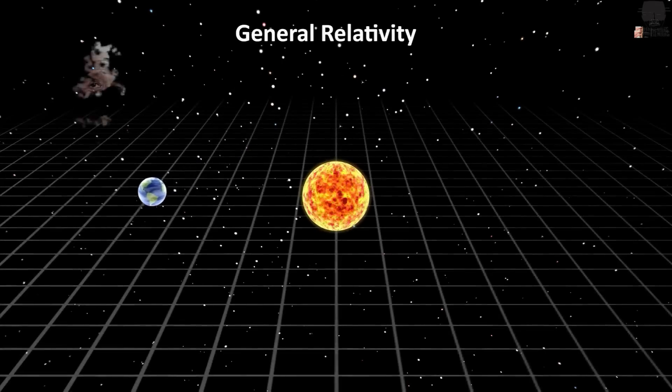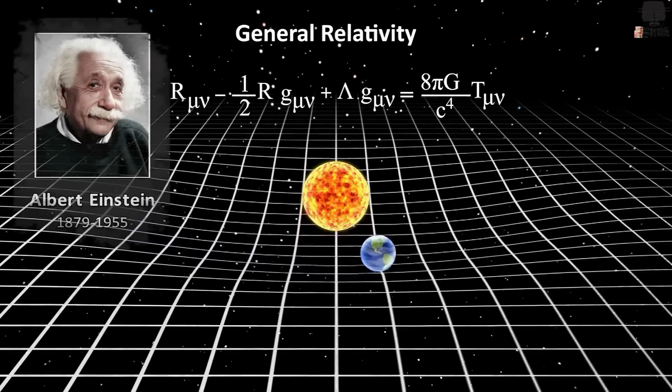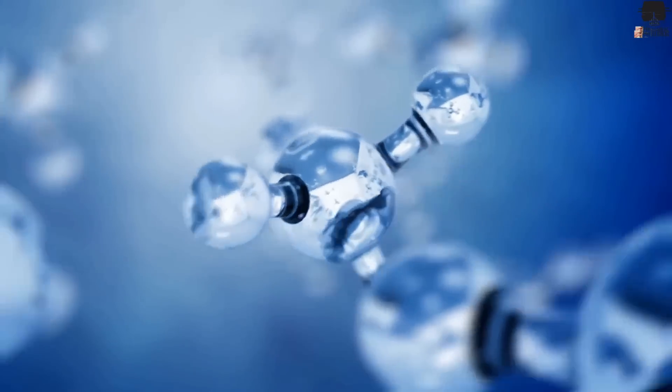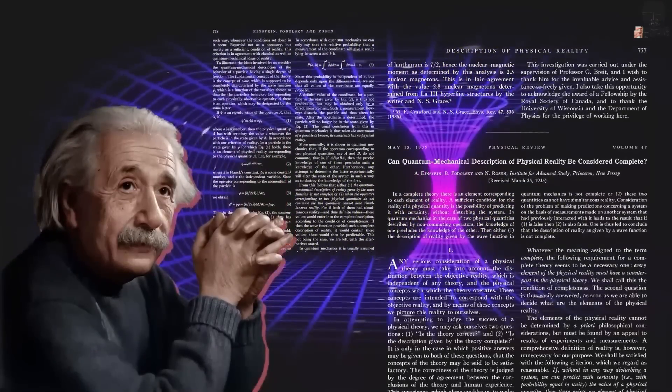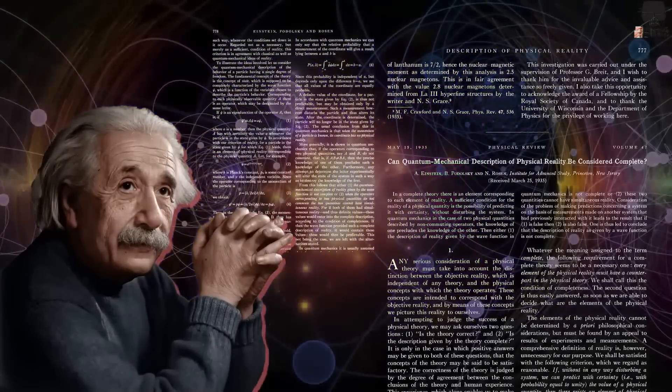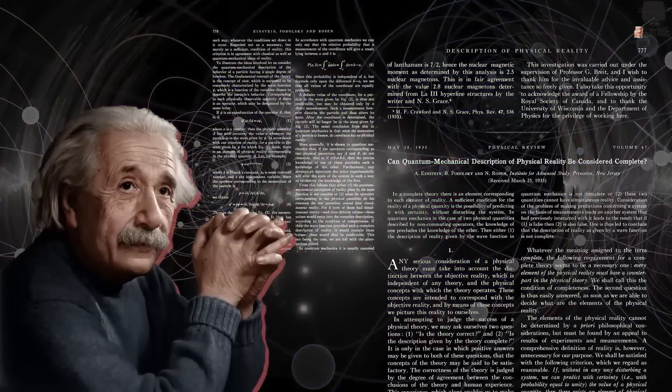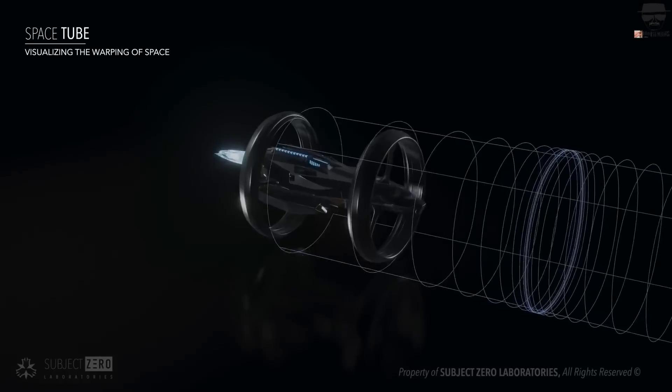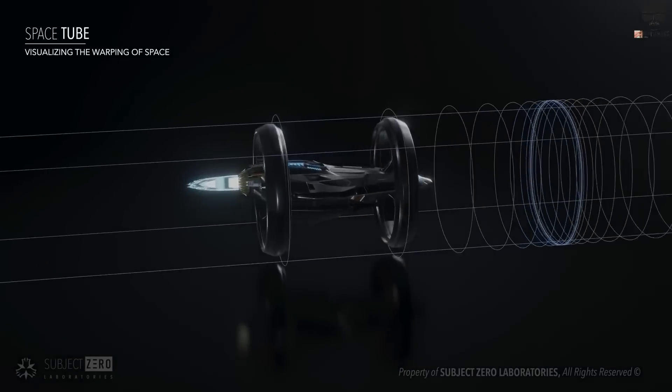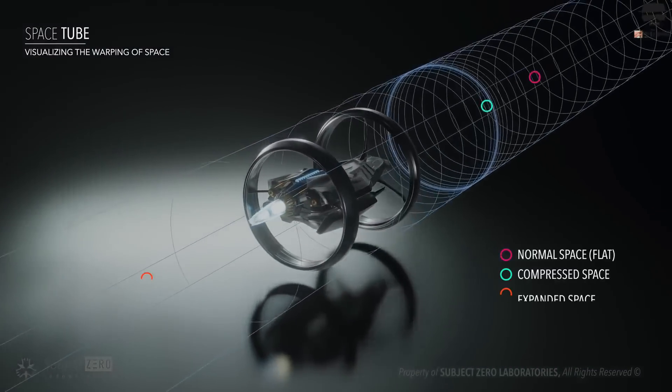Albert Einstein's general relativity theory is the foundation of modern physics knowledge of space-time. According to general relativity, nothing can travel faster than the speed of light in the universe. Mass and energy can also cause space-time to distort around massive objects, such as stars and black holes.